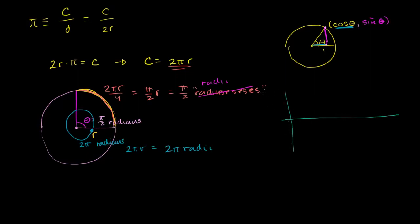We tend to label it — when the angle is 0, sine of theta is 0. Let me draw the x and y-axis. So when the angle is 0, we're right here on the unit circle. The y-value there is 0, so sine of theta is going to be right like that.